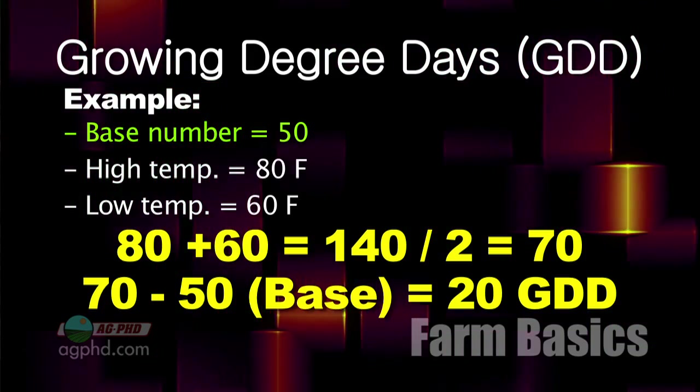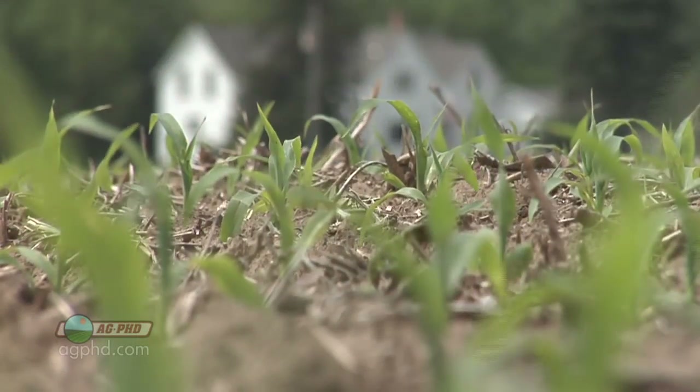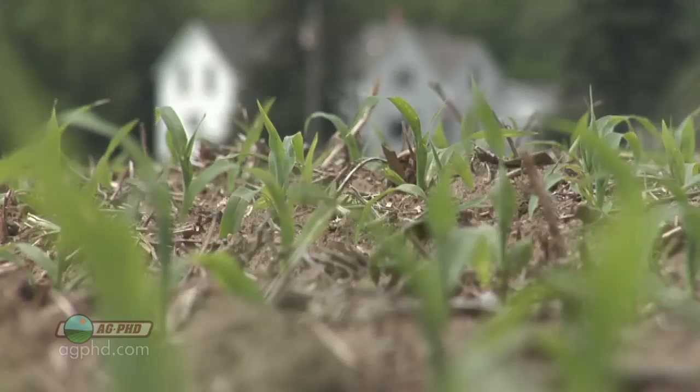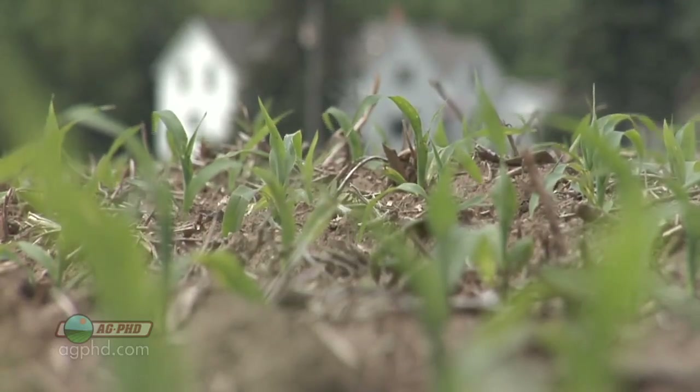One thing to note is that the base temperature can vary. We're figuring corn growing degree days here, but for certain other plants the minimum temperature might be 48 degrees, so 48 becomes the base. Maybe it's 54 degrees. But the most common base out there is 50 degrees — that's the standard in the industry that everybody talks about.